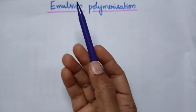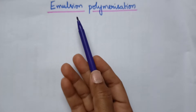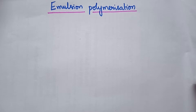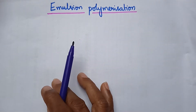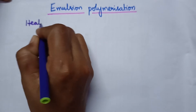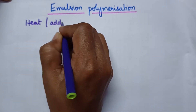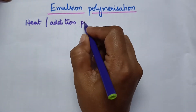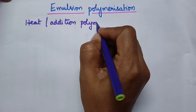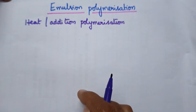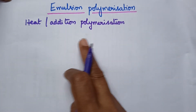Hello students, welcome back to my channel. In this video I am going to discuss in detail about emulsion polymerization. Emulsion polymerization is one of the best polymerization techniques, highly useful to control the heat generated through addition polymerization.